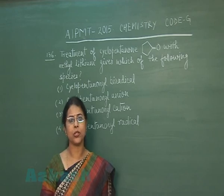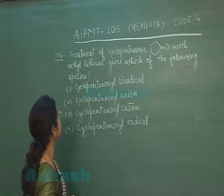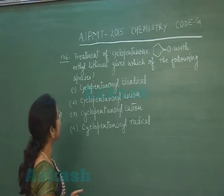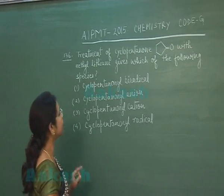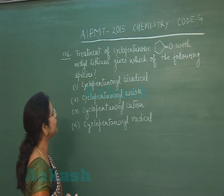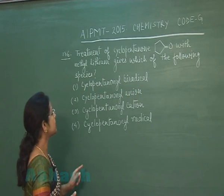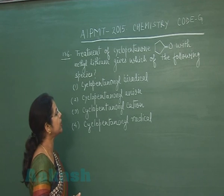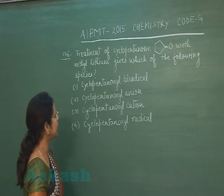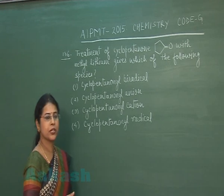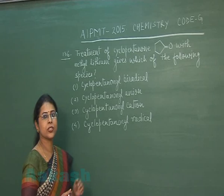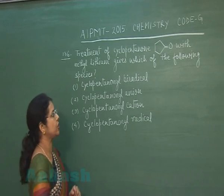First question of this paper is question number 136. Treatment of cyclopentanone with methyl lithium gives which of the following species? The first option is cyclopentanoneyl biradical, second option is cyclopentanoneyl anion, third option is cyclopentanoneyl cation, and fourth option is cyclopentanoneyl radical. So which option is correct? We have to try this question.